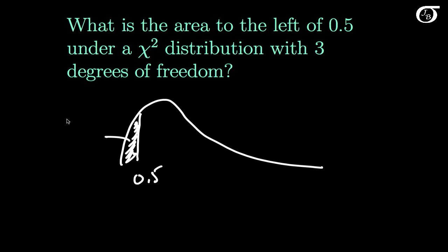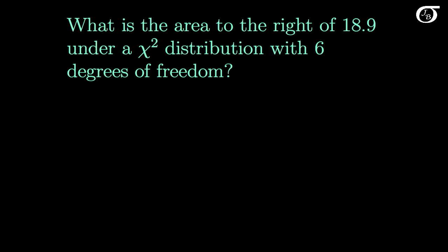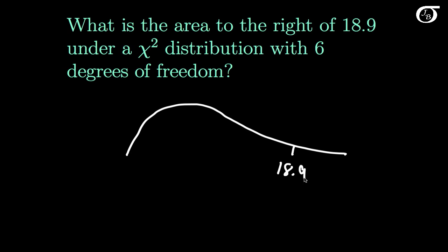R tells me that this area is 0.0811 to four decimal places. Now let's look at a different type of problem: what is the area to the right of 18.9 under a chi-square distribution with 6 degrees of freedom? Our chi-square distribution with 6 degrees of freedom looks something like this, and a value of 18.9 is out in the right tail. Let's find that area.